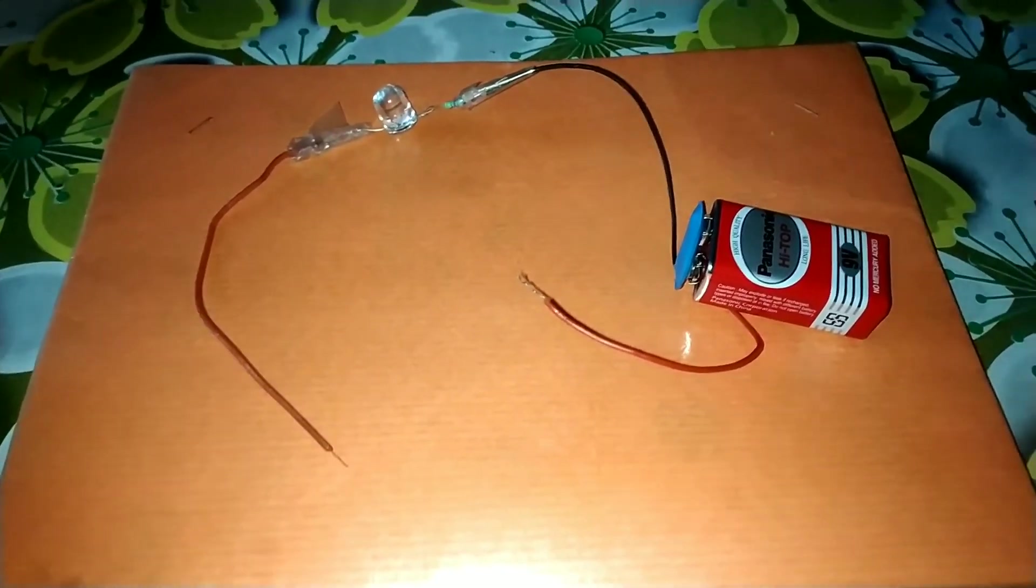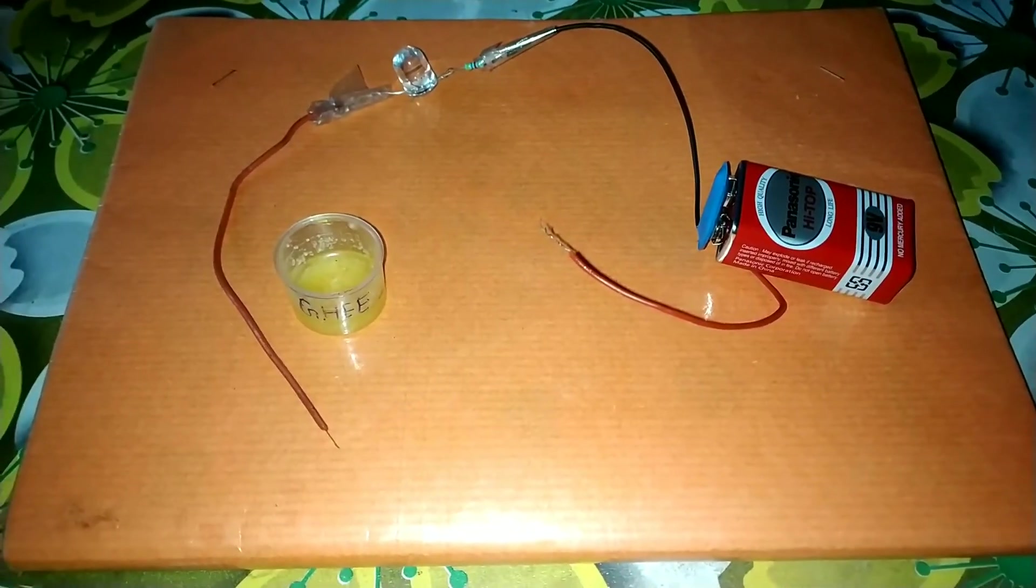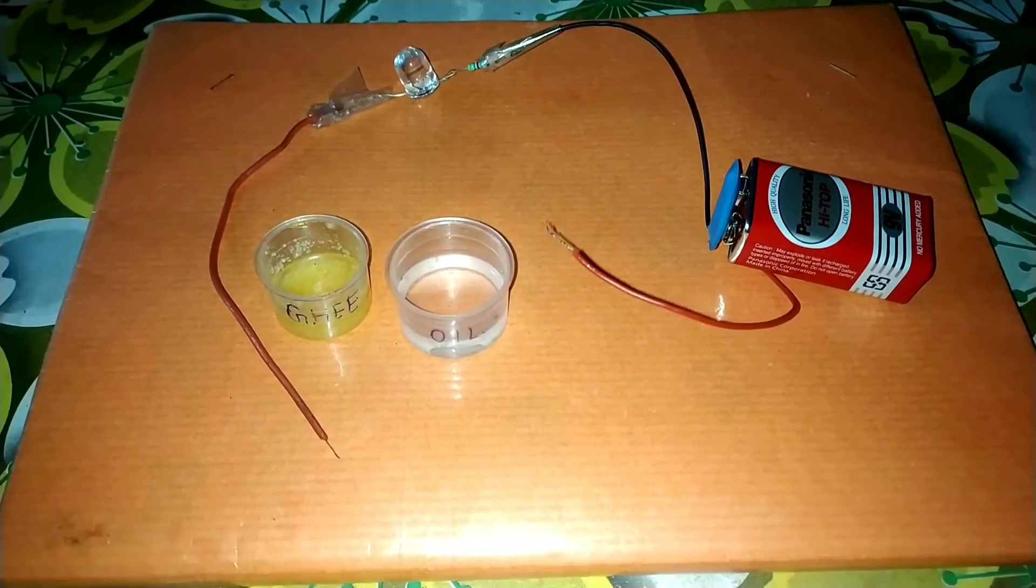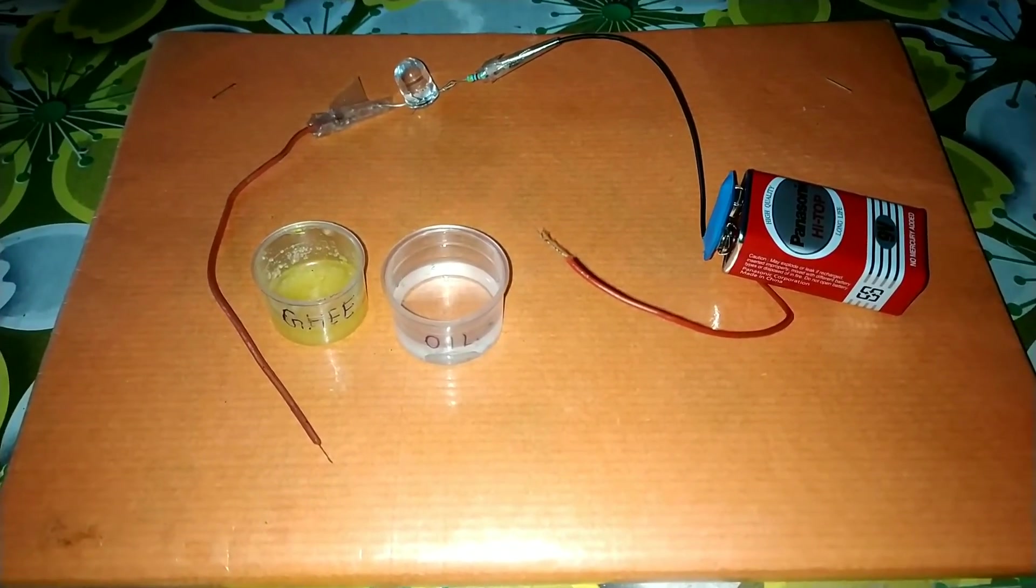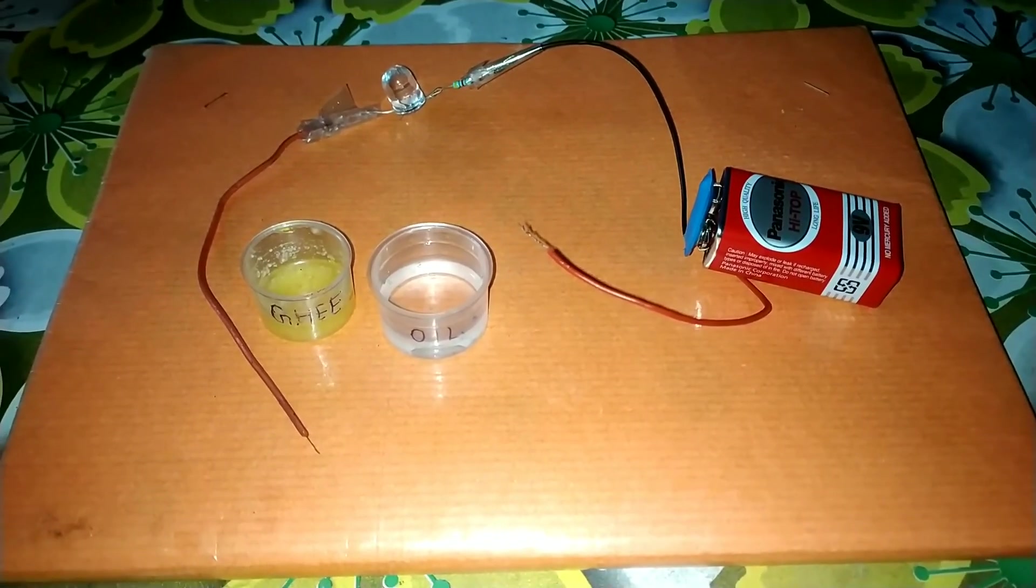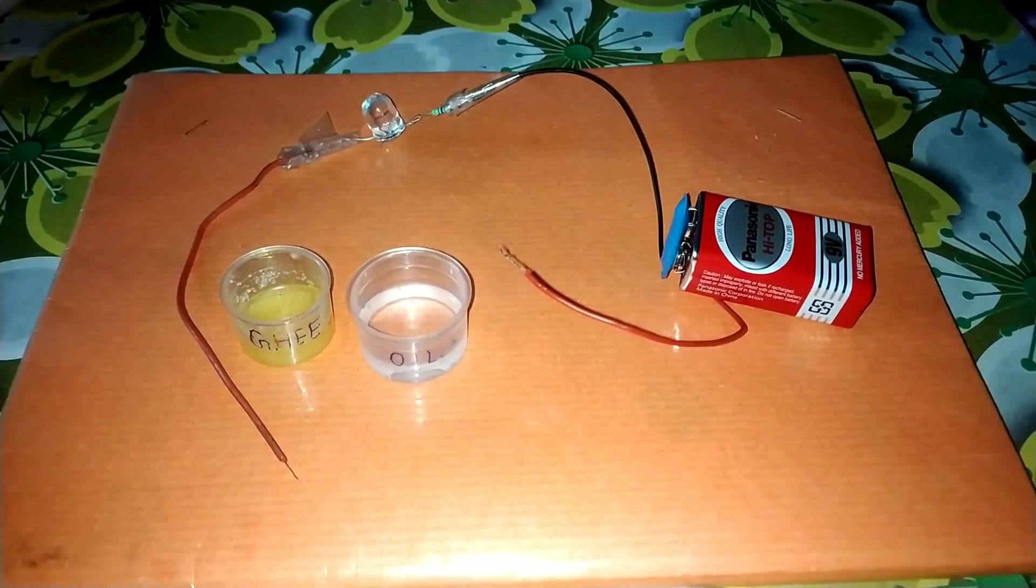We will observe that with some liquids such as ghee and oil, the bulb does not glow because they do not contain ions in them and thus they are bad conductors of electric current.